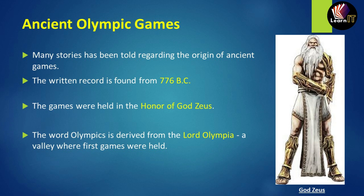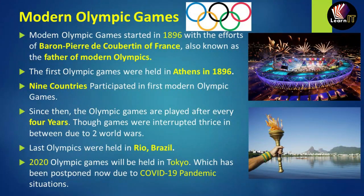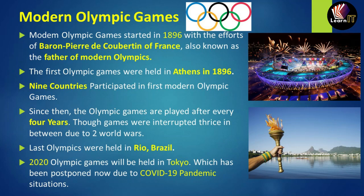Now let us move to the modern Olympic games. The logo for the modern Olympic games is in the form of five rings, which describes the five continents and symbolizes unity. The modern Olympic games started in the year 1896 with the effort of Baron Pierre de Coubertin of France, who is also known as the father of modern Olympics.